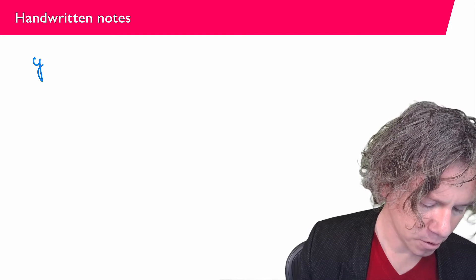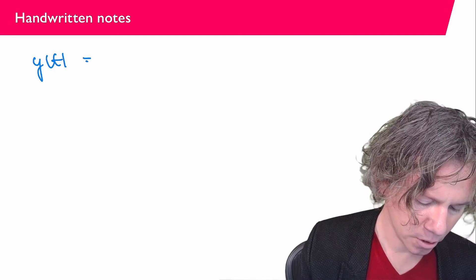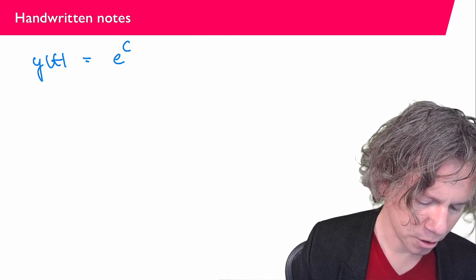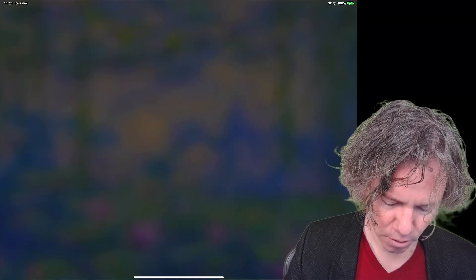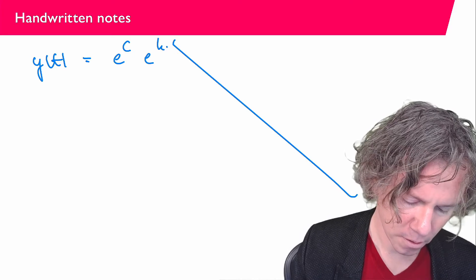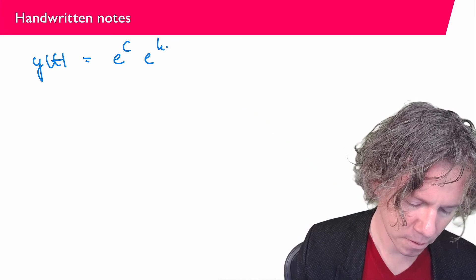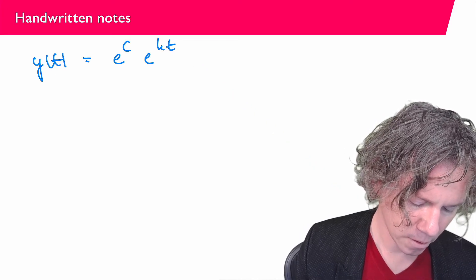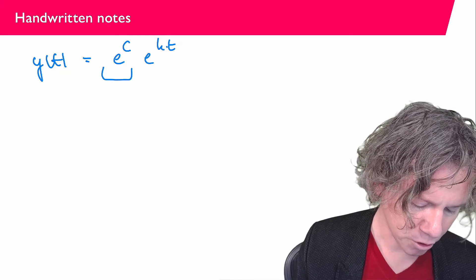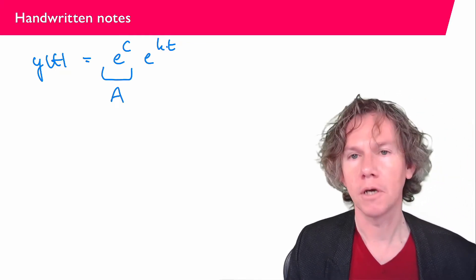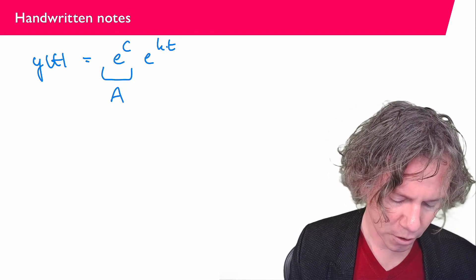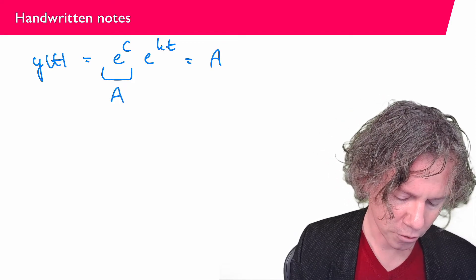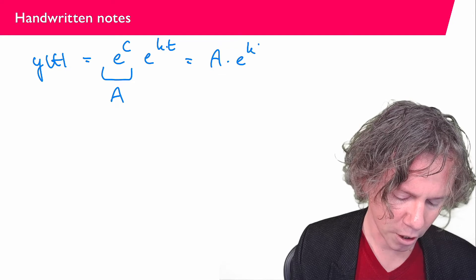So what I have now found is that y(t) = e^C · e^(k·t), and e^C is a new constant a. So this equals a constant times e^(kt).